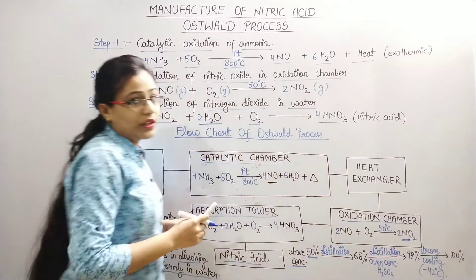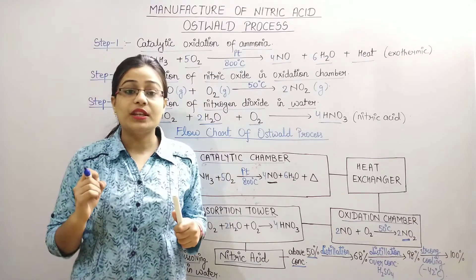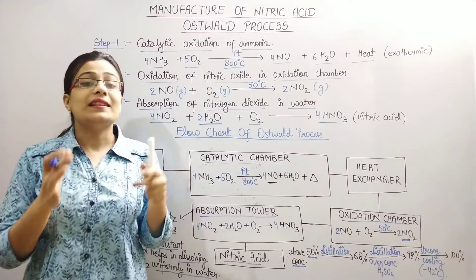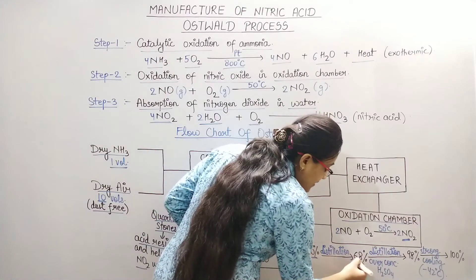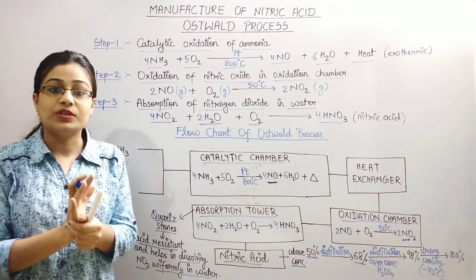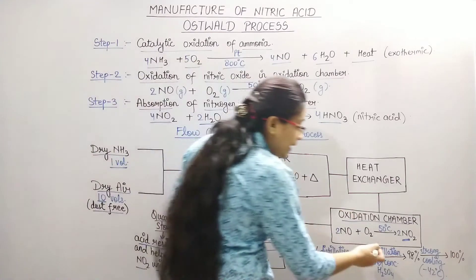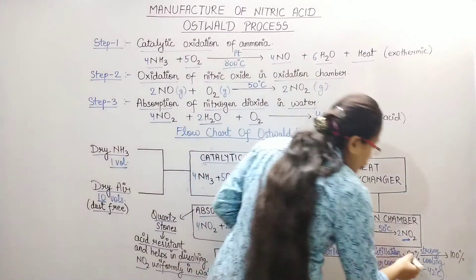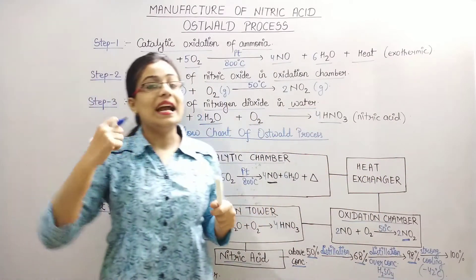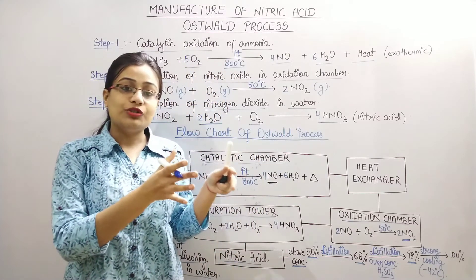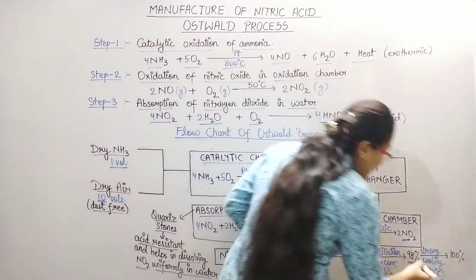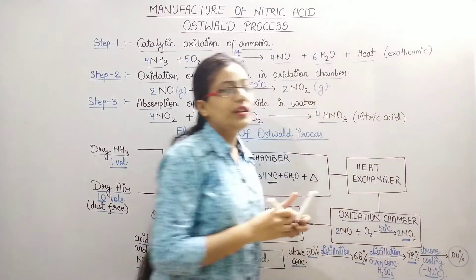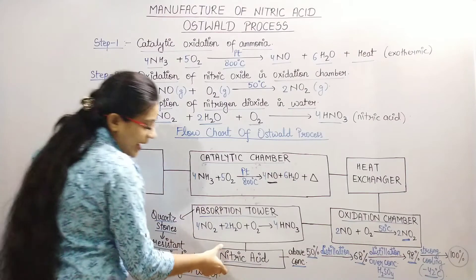Here Nitric Acid is formed. This type of Nitric Acid formation gives about 50% concentrated Nitric Acid. To get more concentrated Nitric Acid above 50%, further distillation is carried out.